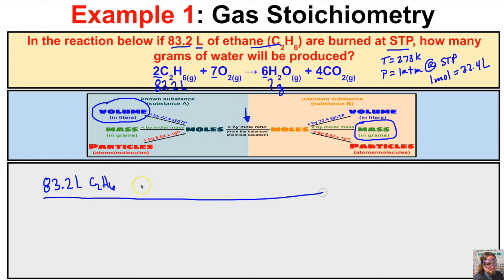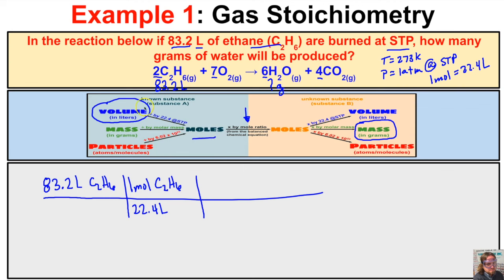We want to know how many grams of water will be produced. Our known substance is expressed in liters, so we have to convert this to moles first. We know that one mole of C₂H₆ gas occupies 22.4 liters of space at STP. Because this is occurring at STP, we can put 22.4 here. If this was not occurring at STP, we couldn't set this problem up like this. So we've now gone from volume to moles.